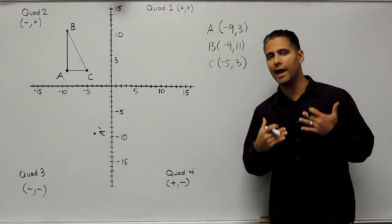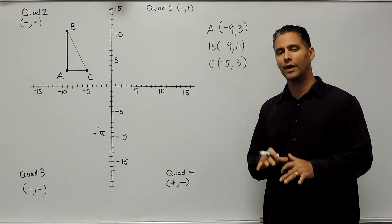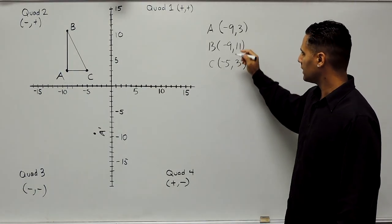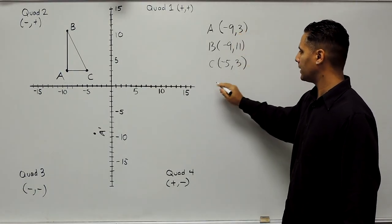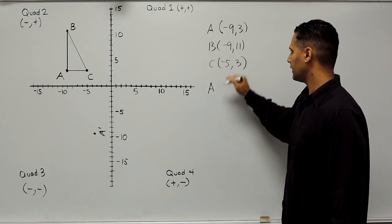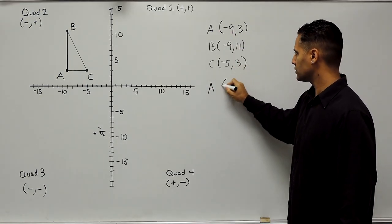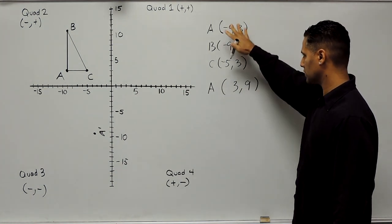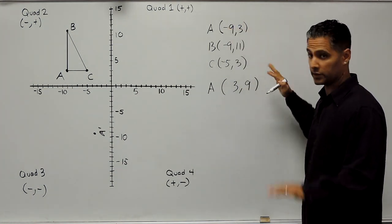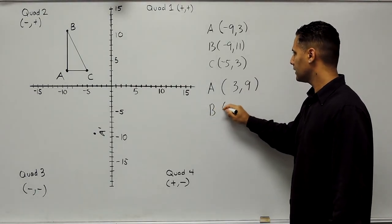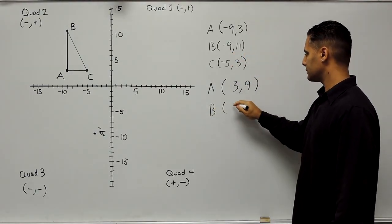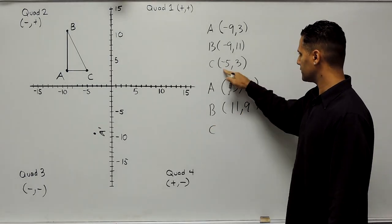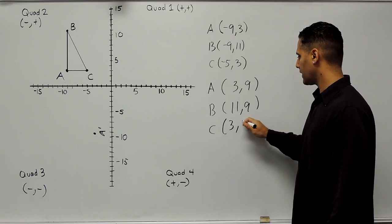After you have figured out the current location of your points, for any 90 degree rotation, what I want you to do is take both coordinates and just swap them. Take the 9 and 3 for point A and switch it around to be 3 and 9, ignoring any negative signs for now — we'll deal with that in a moment. For point B, switch 9 and 11 to be 11 and 9. And for point C, switch 5 and 3 to be 3 and 5.